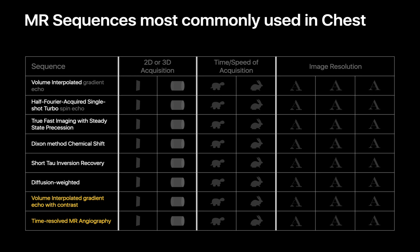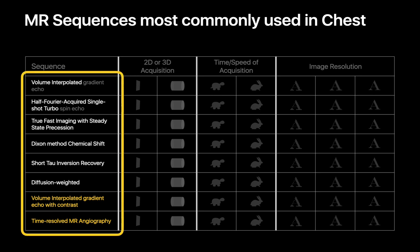Now let's show how we make protocoling decisions for chest MRI in our section. For non-cardiac chest MRI, we can usually get everything we need done with eight sequences. Six sequences do not require contrast, and two sequences — the two bottom ones in yellow on this table — are done with contrast.